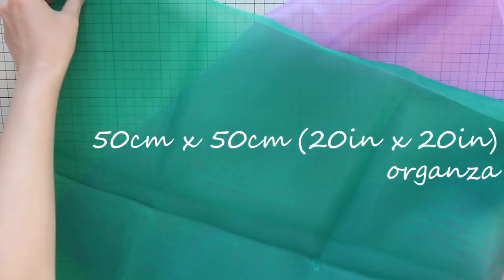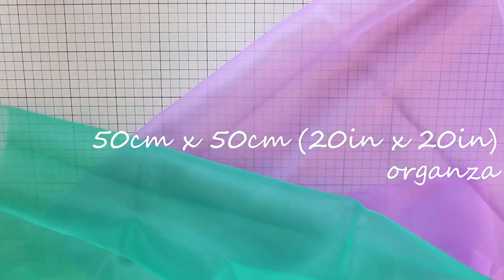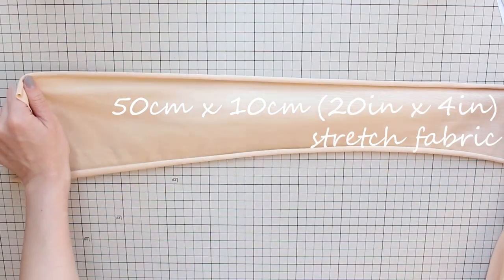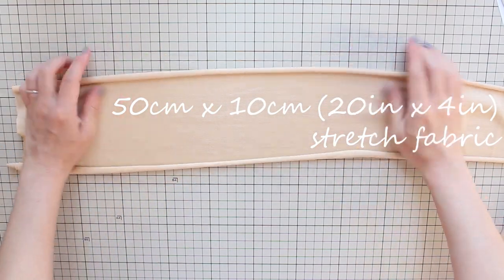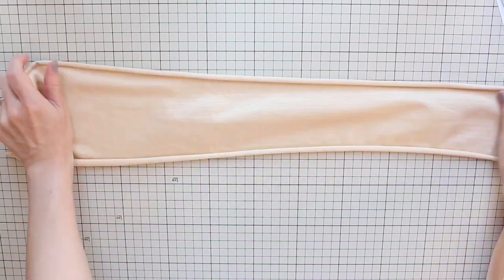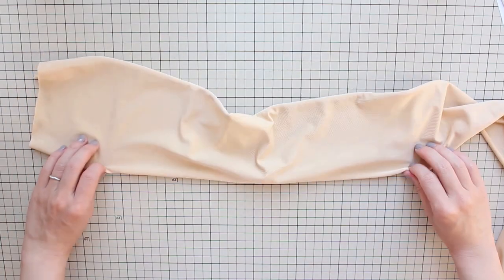To make this DIY seaweed armband you need 50 centimeters by 50 centimeters of organza fabric. I'm using green and purple organza to match my bra top and skirt. 50 centimeters by 10 centimeters of stretch fabric. I'm using this nude fabric here but leftover stretch fabric from your bra top or mermaid skirt will be fun and cute as well.